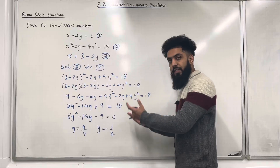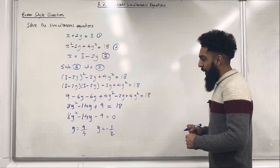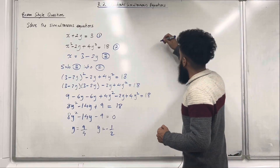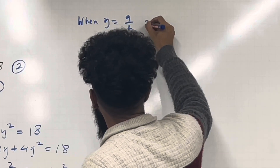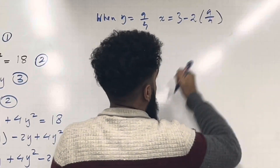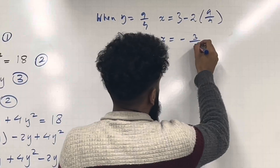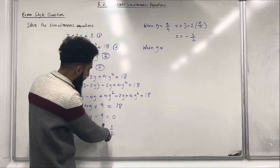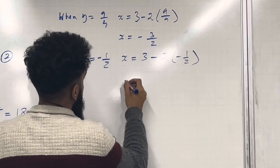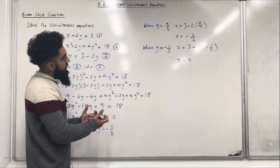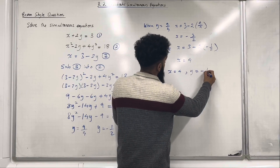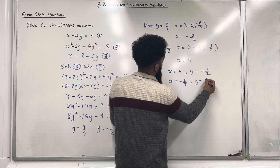You can verify these solutions using the equation function on your calculator. Now we substitute these y values back into equation 3 to find the x values. When y equals 9/4, x equals 3 minus 2 times 9/4, giving x equals minus 3/2. When y equals minus 1/2, x equals 3 minus 2 times minus 1/2, giving x equals 4. So the solutions are x equals 4, y equals minus 1/2, and x equals minus 3/2, y equals 9/4.